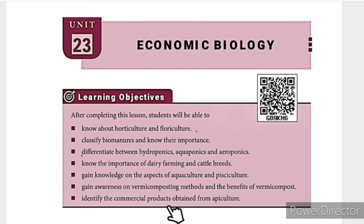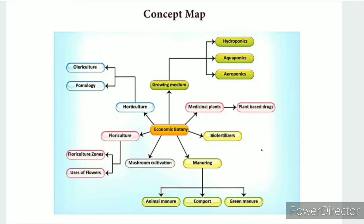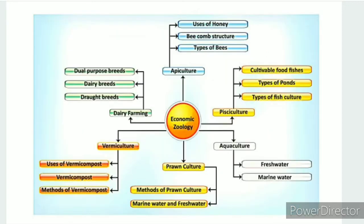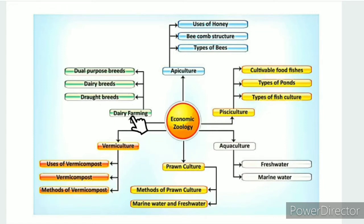These are the learning objectives of aquaculture. In the lesson guide, the concept map for the lesson is Economic Botany — that is plant-related, which is Part 8. The second concept map is Economic Zoology — that is animals-related, which is Part 9, covering dairy farming.